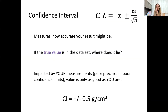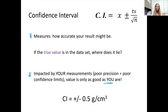The confidence interval measures how accurate your results might be — it gives a narrower range around the average. The question it answers is: if there's a true value for that data set, where does it lie? That true value should lie within the confidence interval. This confidence interval is impacted by your measurement — if you have very few significant figures and a wide range of measurements, you'll get a poor confidence interval. Your value is only as good as your measurements.